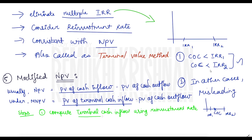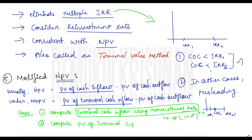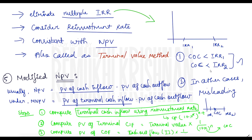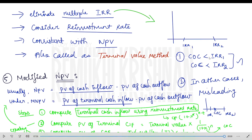The steps for modified NPV: first, find your terminal cash inflow using the reinvestment rate with the formula cash flow × (1 + r)^(n-t). Second, compute the present value of terminal cash inflows: Terminal Value × (1/(1+k)^n), where k is your cost of capital. Finally, find the present value of cash outflow, which remains the same. By equating steps two and three you find the modified net present value. If you've studied time disparity, this is just a piece of cake. With that, I'll close this video — a couple of concepts remain for the next video.